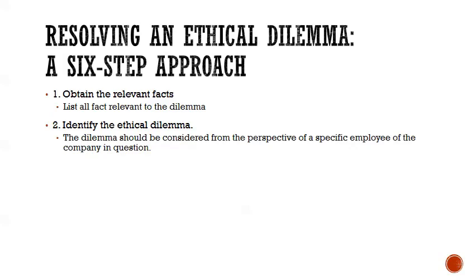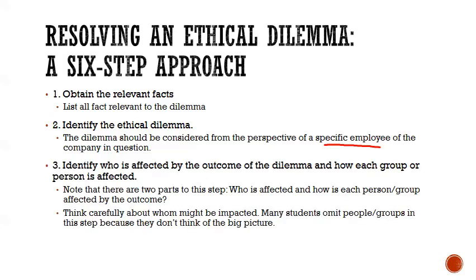Then identify the ethical dilemma. The dilemma should be considered from the perspective of a specific employee of the company in question — not necessarily just the company as a whole — because when you face a dilemma, it's you as an individual deciding whether to do it or not. Number three: identify who is affected by the outcome and how each group is affected. There are two parts — who's affected and how. Think carefully, because many students tend to omit people or groups because they don't think of the big picture. There are typically several people impacted by a dilemma.